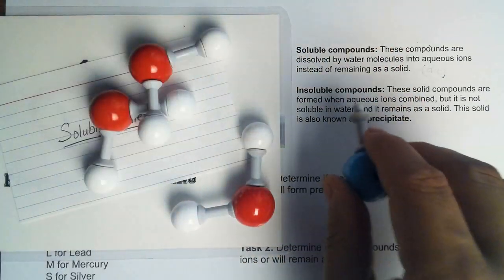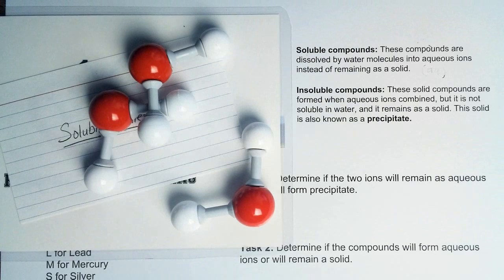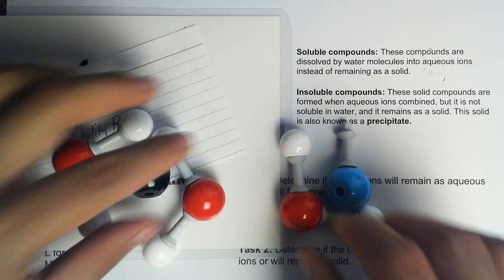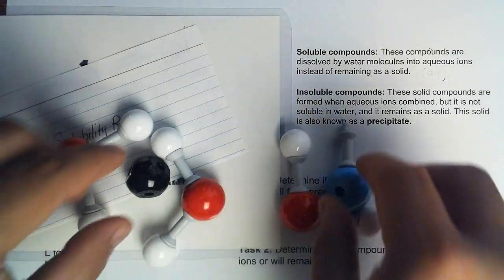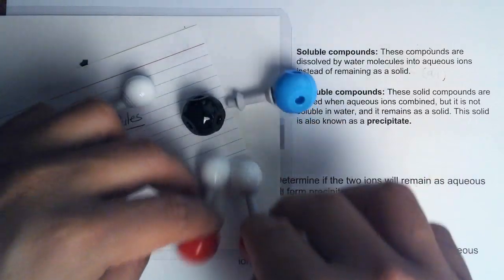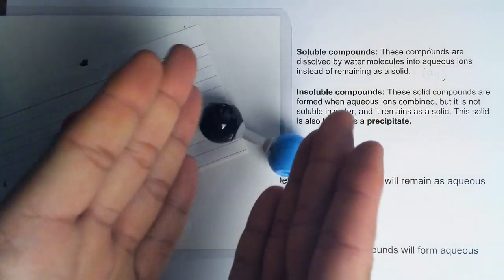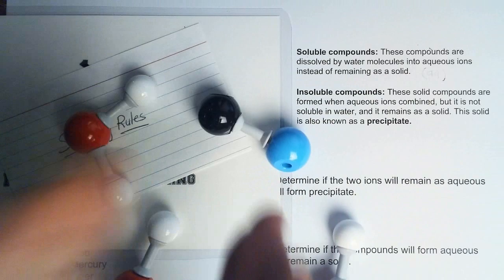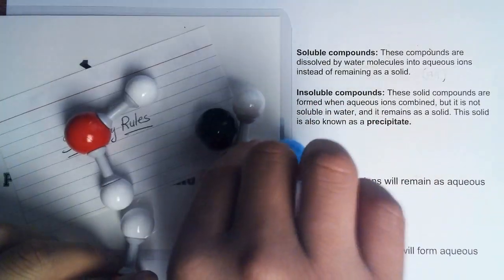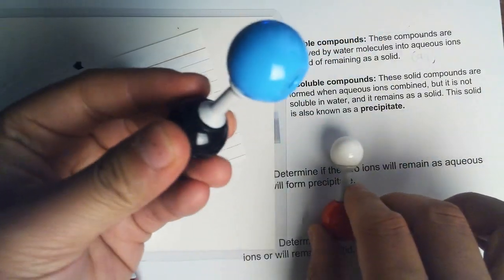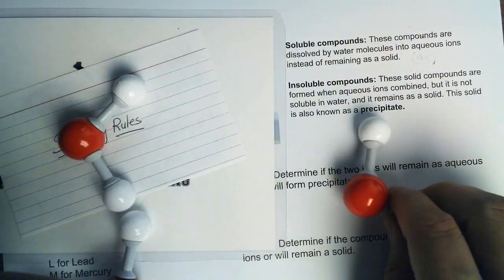Where if a compound is insoluble, this compound remains as a solid. Sometimes when we have ions being separated by water molecules, the attractive force between the two charges is so strong that it will separate the water molecules and become a solid. The electrostatic force — the ionic bond specifically — is so strong that the water molecules cannot break it at all. This will become a precipitate if we have a bunch of this solid form. A precipitate is basically a solid in a solution.